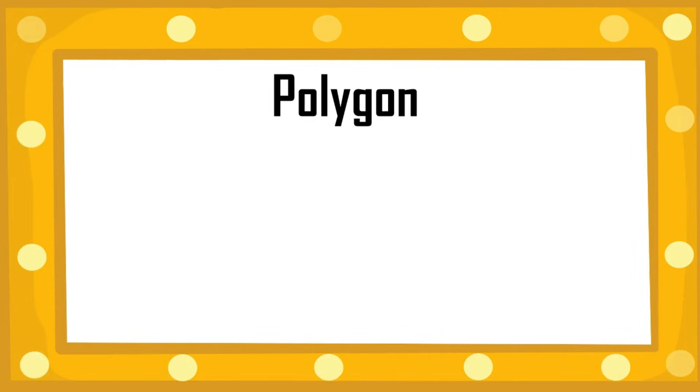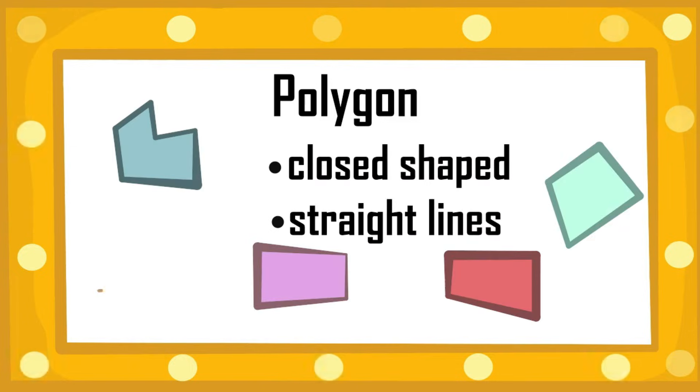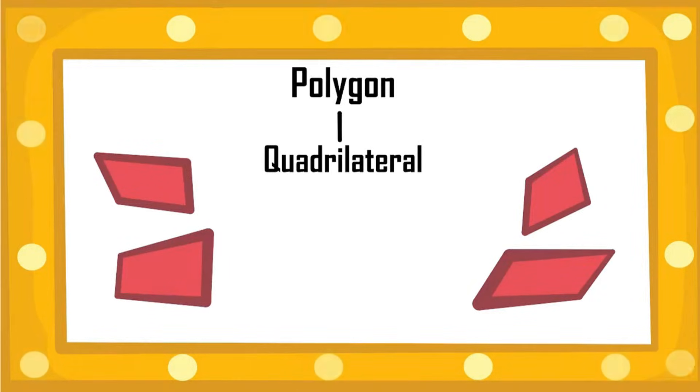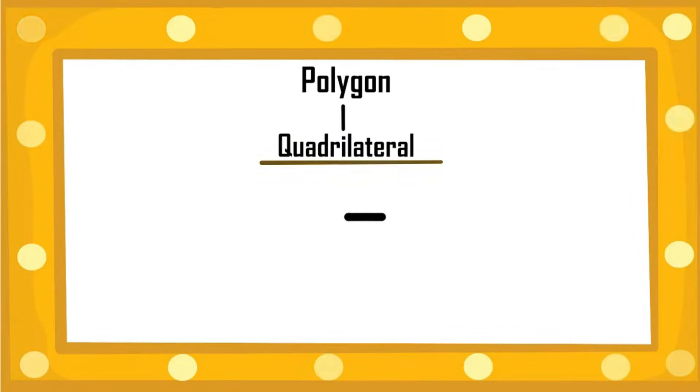Start at the top with the polygon, a closed shape with straight lines. Underneath, the families are organized by number of sides. Four sides to be exact—it's called a quadrilateral. It then splits to two types as you go down the road.